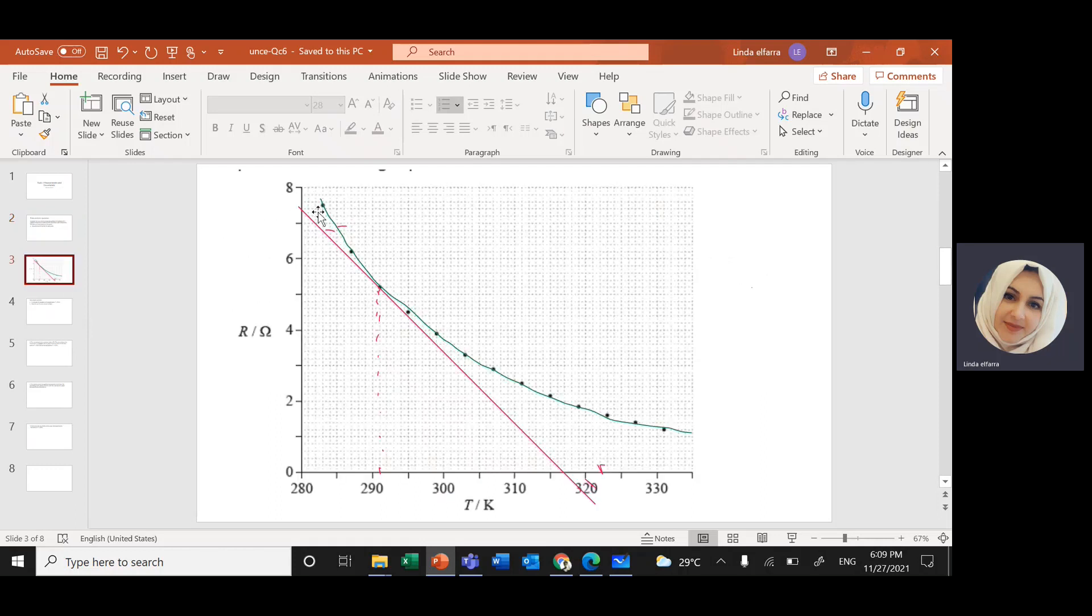So here I draw the data. I just connect the points together. Best fit line, not necessarily to be a straight line. It could be a curve.